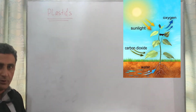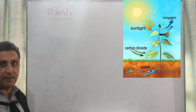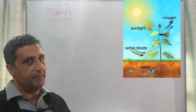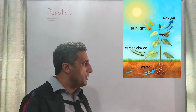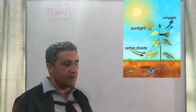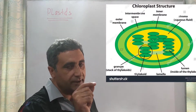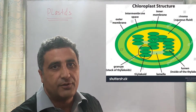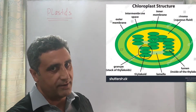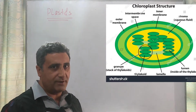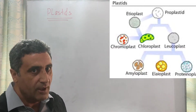Do you know that plants synthesize food for themselves? When the plants synthesize food for themselves, they use an organelle that is known as chloroplasts. What are chloroplasts and what are plastids? Today we will know.